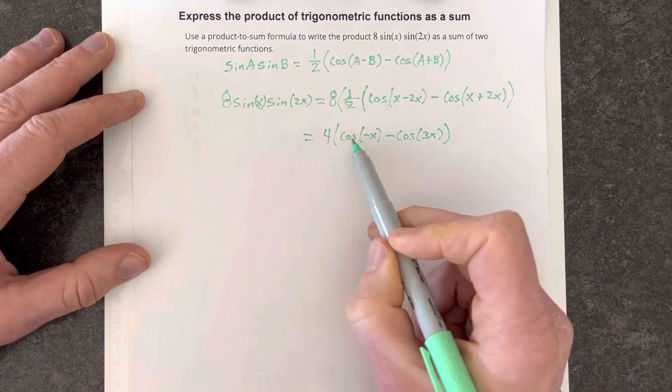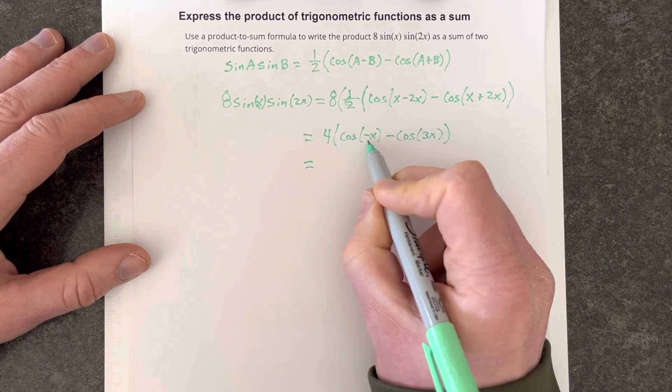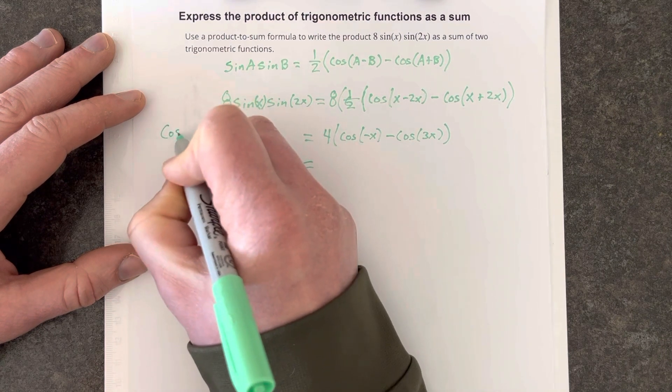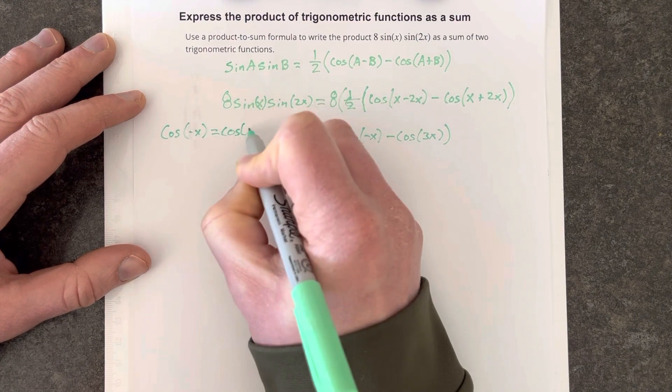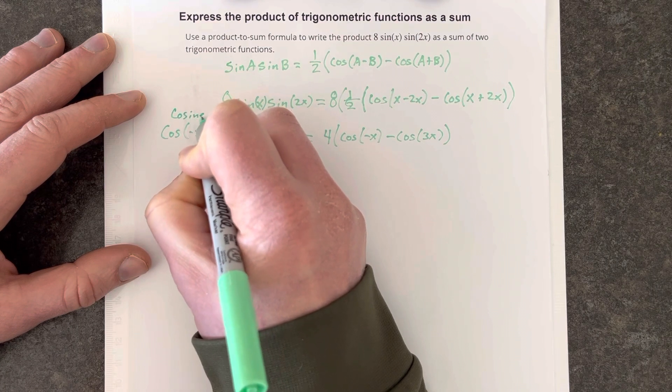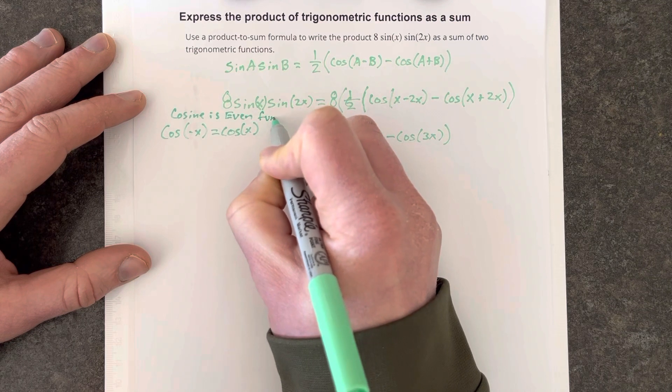So we're going to distribute the 4 to each term, but at the same time, we know that cosine of negative x—we know cosine is an even function. So that means that cosine of negative x is really equal to cosine x because cosine is an even function.